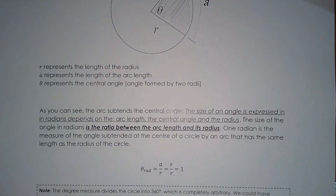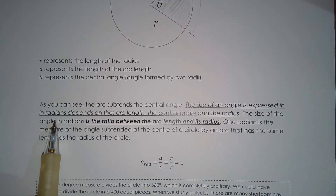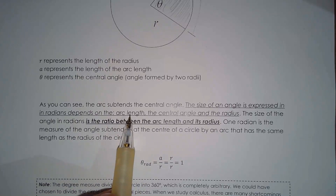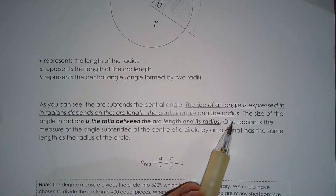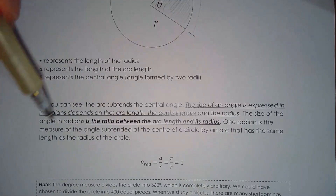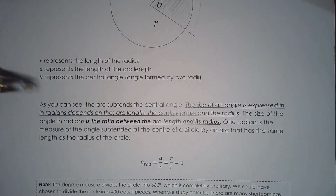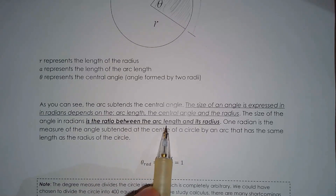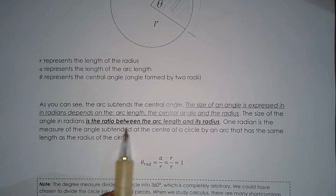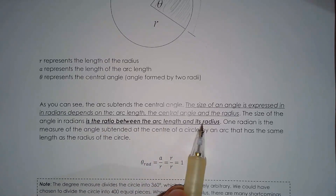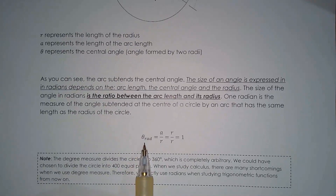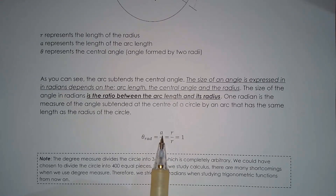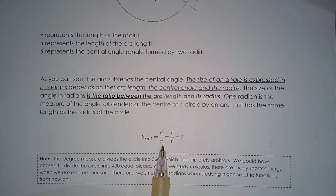Using arc length, radius, and theta, we can come up with a definition of a radian. The size of an angle expressed in radians depends on three things: the arc length, the central angle, and the radius. The definition is: the size of the angle in radians is the ratio between the arc length and its radius — that is, the central angle in radians equals arc length over radius. Now, if the arc length is the same as the radius, you have exactly one radian.